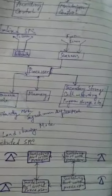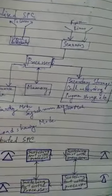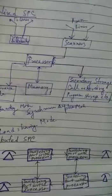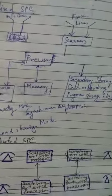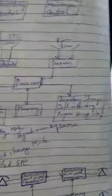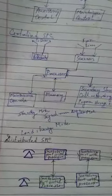The distributed SPC block is designed with a switching part with the processor, and that is connected with all the subscriber channels or the subscriber loop. Let me describe about this distributed SPC.